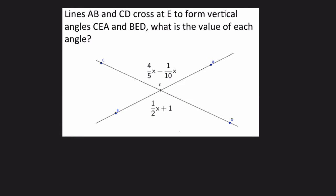Here they tell us that lines AB and CD, so here's AB and here's CD, and they cross at E to form vertical angles CEA, that's this angle right here, and BED, that's this angle right here. What is the value of each angle? They use algebra to write out each angle. They say that this angle is a half X plus 1. So that algebraic expression represents our first angle. And here with this angle, they use this expression 4 fifths X minus 1 tenth X.